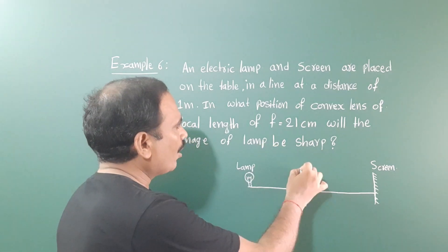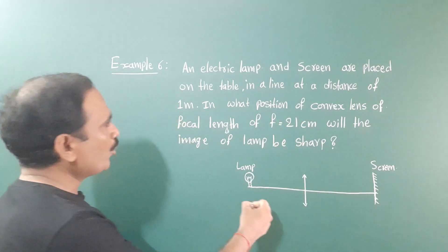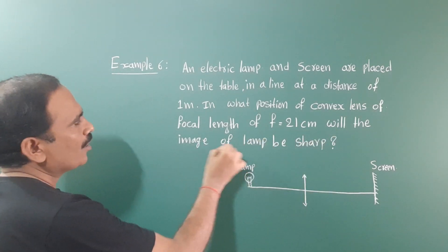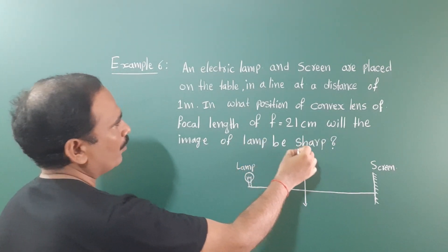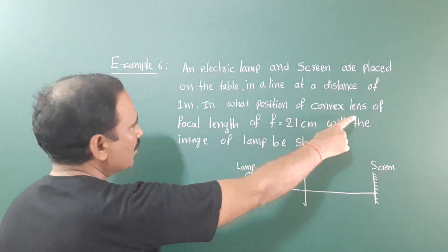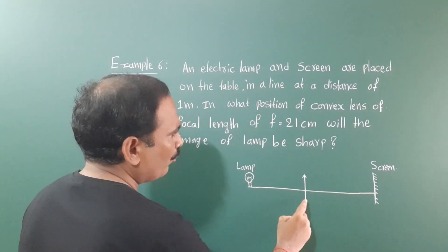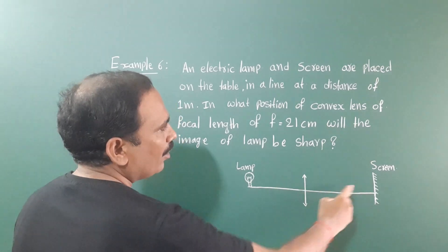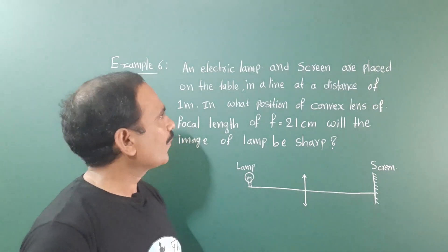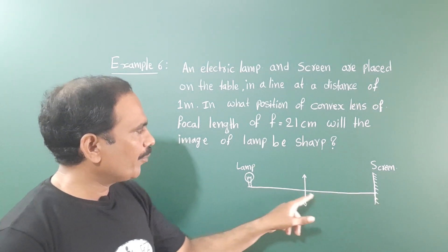We are taking one convex lens whose focal length is 21 centimeters. At what position will the image of the lamp be sharp? By placing the lens at what position can we get a sharp image on the screen? Here we have a lamp, a screen, and a table.